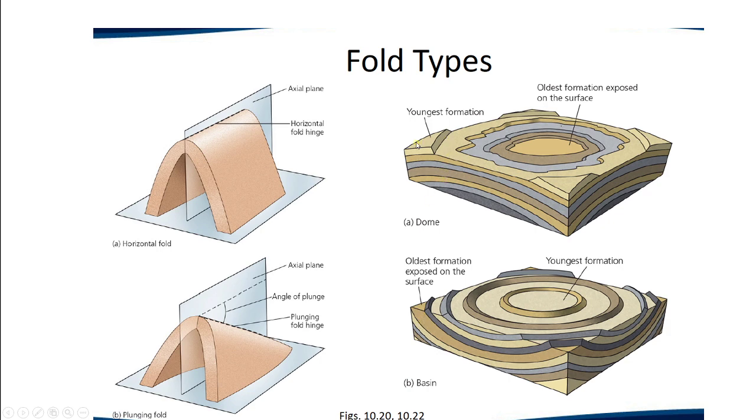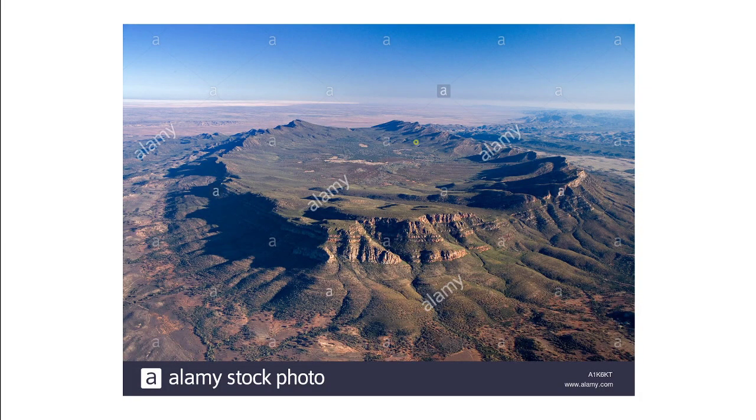In a dome we have the oldest formation in the center and the youngest formation on the outside. In a basin, the youngest is in the center. If you look at this picture, we have a doubly folded syncline that is now a basin. There are lots of these around the world. The Flinders Ranges is full of them. Wilpena Pound is a place I recommend you go to; it's a big pound because they used to let sheep in there to graze and didn't put fences up because the units took care of it.